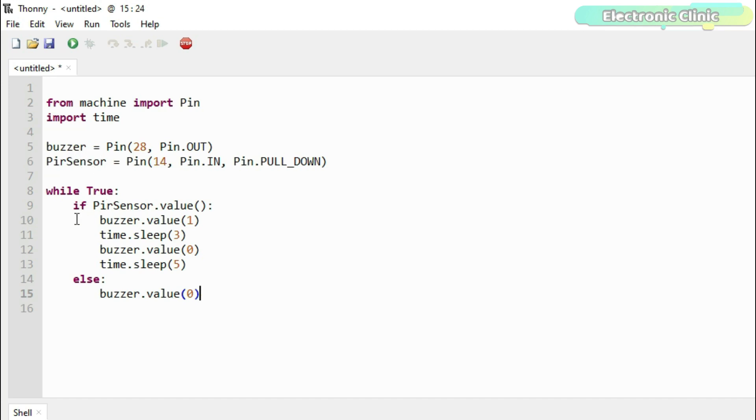Inside the while loop, we check if the PIR sensor has detected any motion and then accordingly turn on and turn off the buzzer. So that's all about the code.